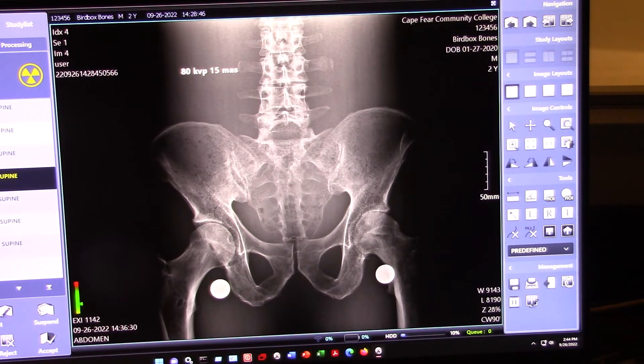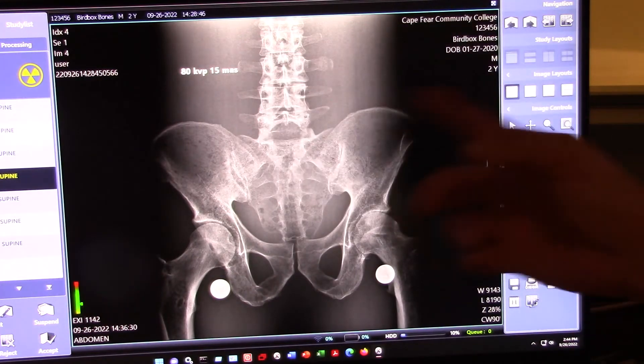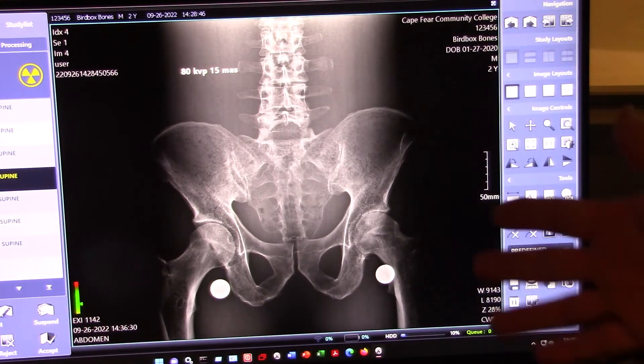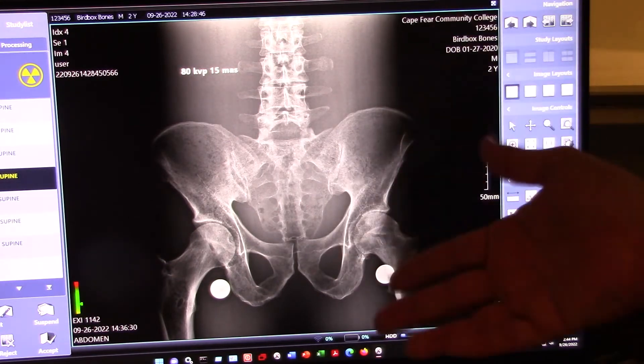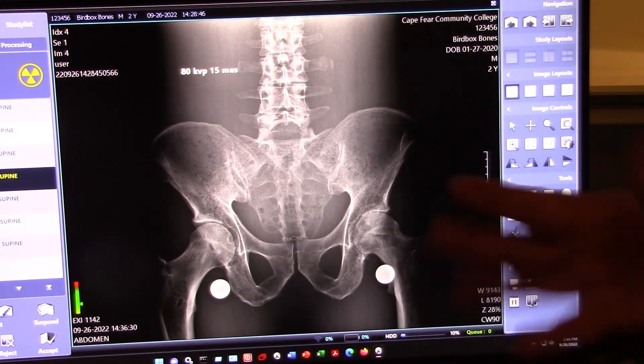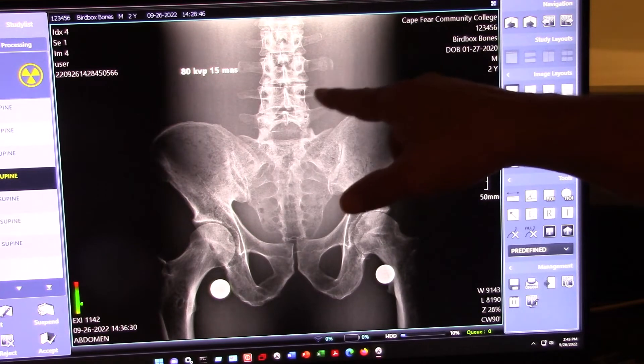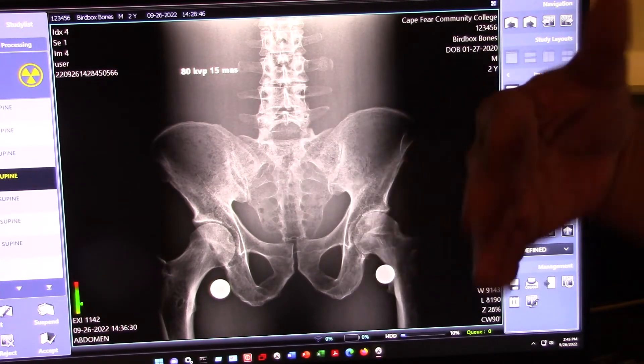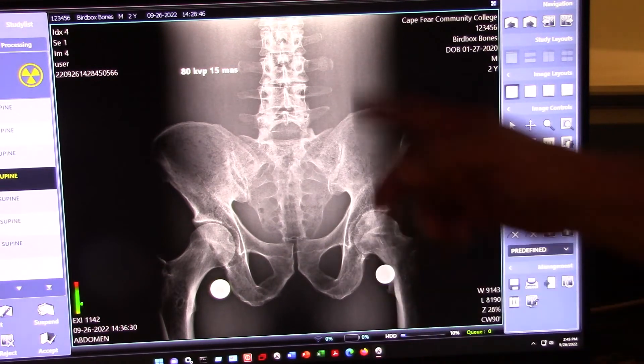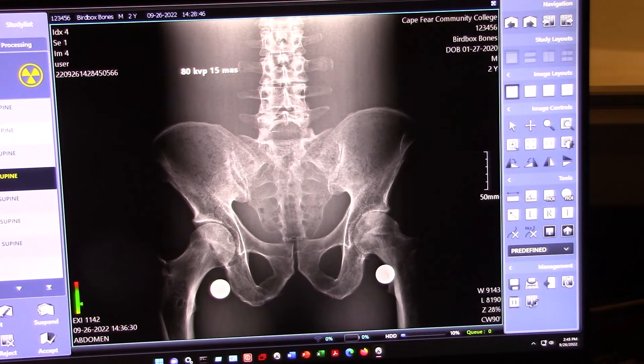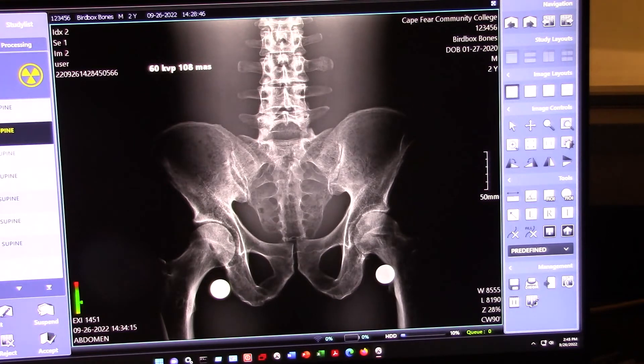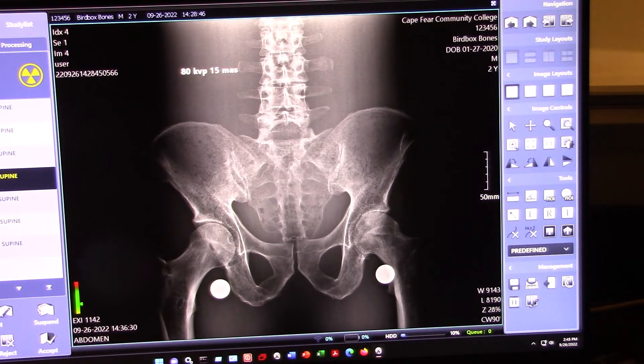here we go to 80 KVP, which is a pretty typical abdomen technique. Now, unfortunately, we don't have any real soft tissue here. If this was a human patient, we'd have intestines and things in here so that we would be able to see if those were demonstrated well. As it is, we're restricted to just bones. But still, you can see where the bones start and stop. So, still a relatively high contrast image, but not as high as it was to start with.